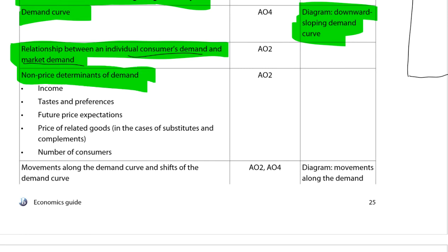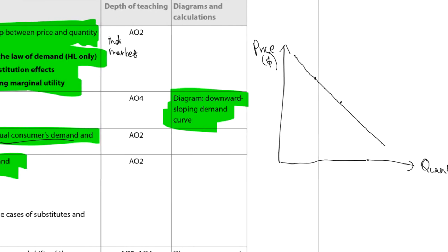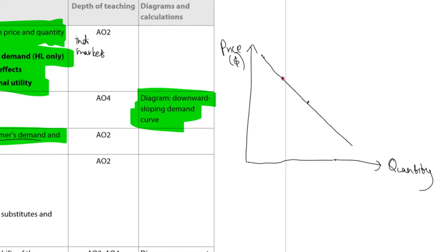The non-price determinants of demand — as the name suggests — are factors other than price that affect demand. Notice the distinction: when price changes, we say 'quantity demanded' has changed — a movement along the same demand curve. But when the entire curve shifts, we say 'demand' has changed. If the curve shifts right, every price level sees more demand — that's an increase in demand. If the curve shifts left, that's a decrease in demand. A movement along the curve from one point to another is a change in quantity demanded.